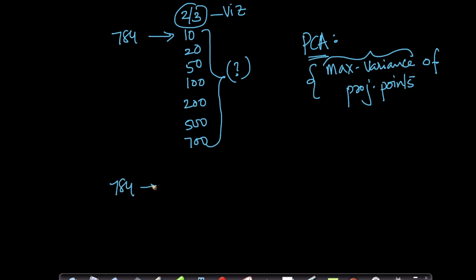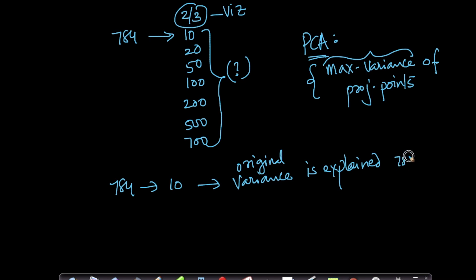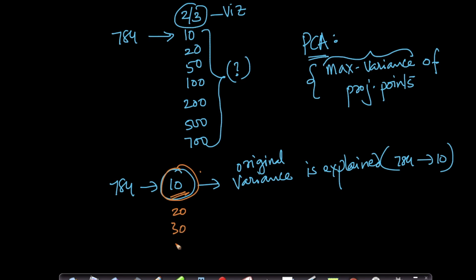PCA at its core is a variance maximization technique — we want to retain as much variance as possible. The question is: if I go from 784 dimensions to 10 dimensions, how much of the original variance is explained in those 10 dimensions? If I can put numbers here, I can make a choice whether to go to 10, 20, 30, 200, or 700 dimensions — because our whole objective was maximizing variance. That's where eigenvalues will be used.